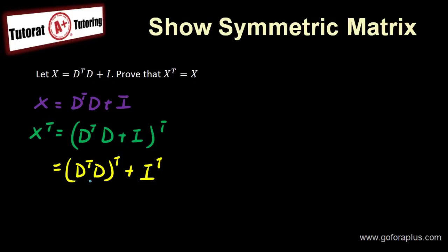So I flip the two matrix, but they're both d. So I'll get to dtdtt plus i.